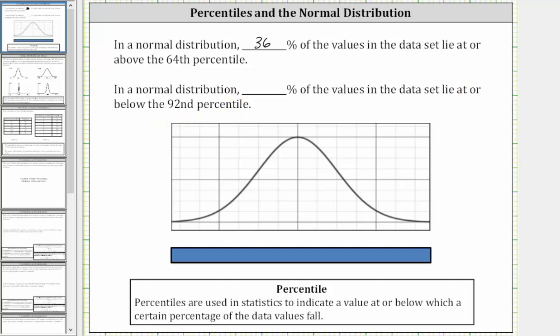So again, to model this using the bar, the 92nd percentile might be, let's say here, where 92% of the data must be at or below this data value or the 92nd percentile.